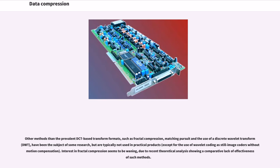Other methods than the prevalent DCT-based transform formats, such as fractal compression, matching pursuit and the use of a discrete wavelet transform (DWT), have been the subject of some research, but are typically not used in practical products, except for the use of wavelet coding as still image coders without motion compensation. Interest in fractal compression seems to be waning, due to recent theoretical analysis showing a comparative lack of effectiveness of such methods.